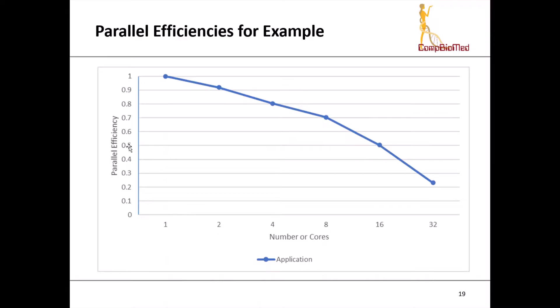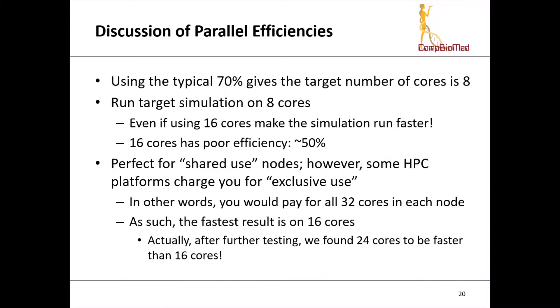Perfect for shared nodes, you would use eight cores because you get the most efficiency. But on exclusive use nodes, where you have to pay for all the cores in a single node, in this case 32 cores in a node, you should really run on 16 cores. That's the fastest time. Even though it's not the most efficient, it's the fastest because you are running in exclusive use. We did more testing and discovered that 24 cores was faster than 16 cores with worse parallel efficiency, but it was faster. If you're going to be running in shared use, or if you've got hundreds or thousands of nodes in the future, then you have to consider parallel efficiency, not just how fast it goes.